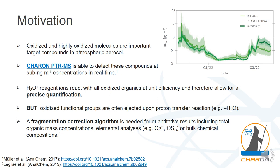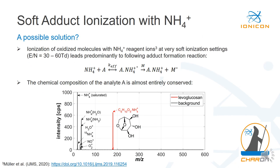There is one drawback: oxidized functional groups are often ejected upon proton transfer reaction, leading, for example, to a loss of neutral water. Therefore, we have developed a fragmentation correction algorithm, which is needed for quantitative results including total organic mass concentrations, elemental analyses, and bulk chemical compositions. But there are also other possibilities to measure without a lot of fragmentation — one of these is soft adduct ionization with ammonium ions.